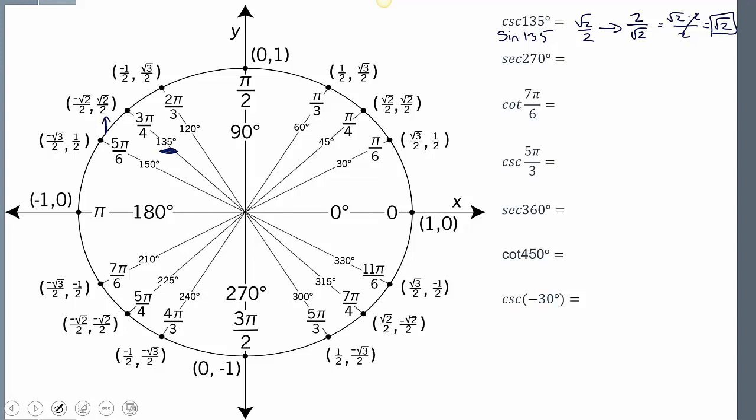Secant. I know it relates to cosine. So the cosine of 270 degrees is 0. Now we have to think of that as 0 over 1. So if I do the reciprocal of 0 over 1, I'm going to get 1 over 0. Well, that's undefined.